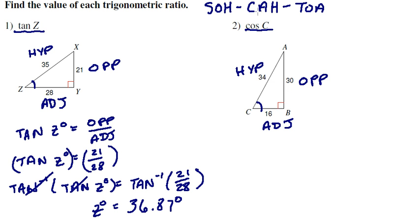Now cosine is adjacent over hypotenuse. And we're finding the cosine of angle C.